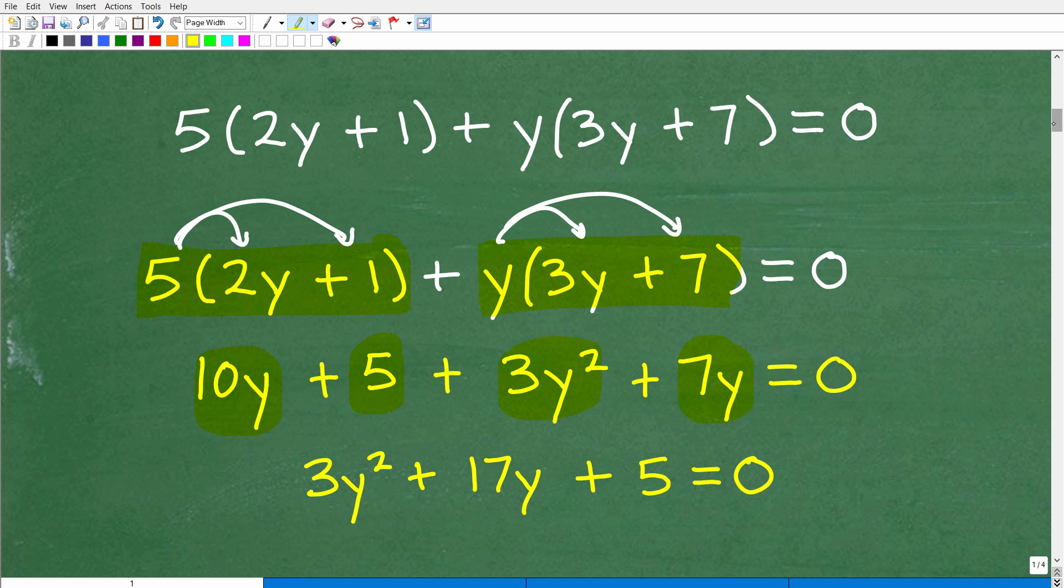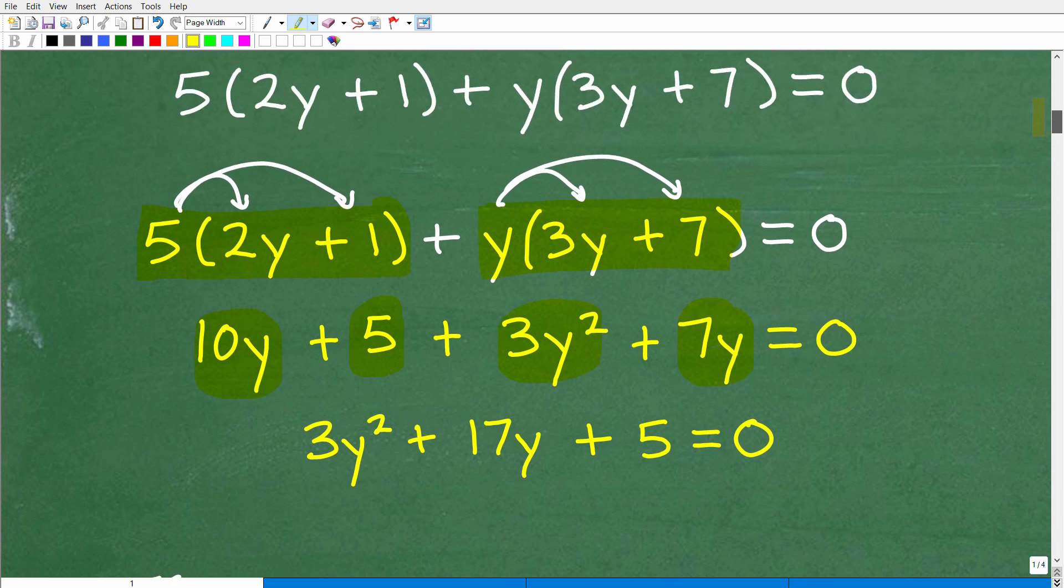Okay, so the next thing we want to do is go ahead and add like terms. So what are our like terms? Well, I only have 1, 3y squared. So I want to write that up front because you always want to be thinking about writing the terms of your expressions from highest to lowest power. We call that standard form. That's going to be important here. So we have 3y squared, we'll write that first. And then I have a 10y here and a 7y here, so I can combine those. Those are our like terms into 17y. And that leaves me with just this 5 right here. So we'll put that last.